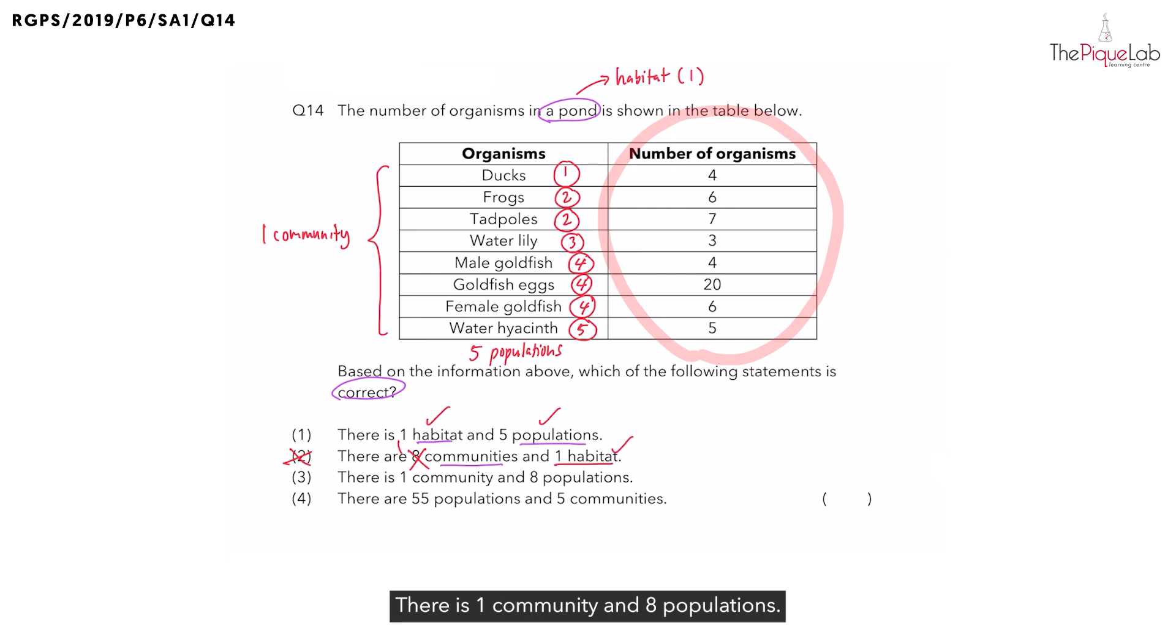Statement three. There is one community and eight populations. We know one community is correct, but we have five populations. So, that is out.